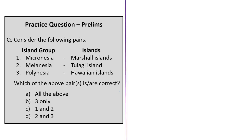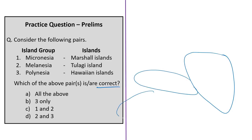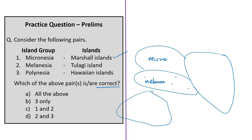The twenty-fifth question is about Pacific island groups. Polynesia is on the eastern side. Melanesia is above and northeast of Australia; Micronesia is north of Melanesia. Important islands in Melanesia include Fiji, New Caledonia, Vanuatu, Solomon Islands, and Papua New Guinea. Kiribati and Marshall Islands are in Micronesia. Polynesia includes Hawaii, New Zealand, and Easter Island. Marshall Islands in Micronesia, Solomon Islands in Melanesia, and Hawaiian Islands in Polynesia are all correctly matched. The correct answer is option A: all of the above.